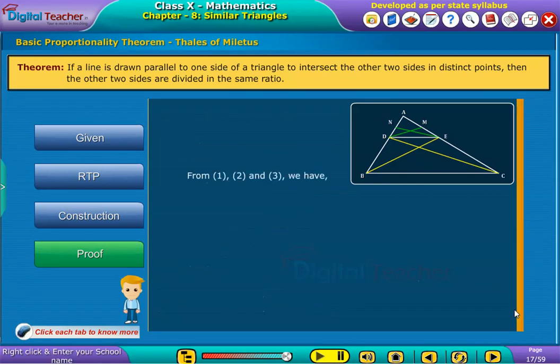From 1, 2 and 3, we have obtained AD by DB is equal to AE by EC. Now, let us learn about the converse of the above theorem in the following activity.